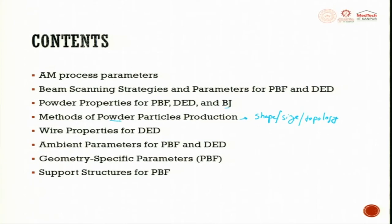Methods of powder particle production are also very important because they directly influence the shape, size, and topology of the powder particles, which in turn influences flow ability. Next is wire properties for directed energy deposition, then ambient parameters required for both processes, and then geometric and specific parameters.